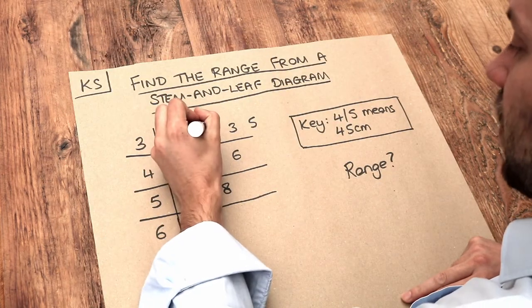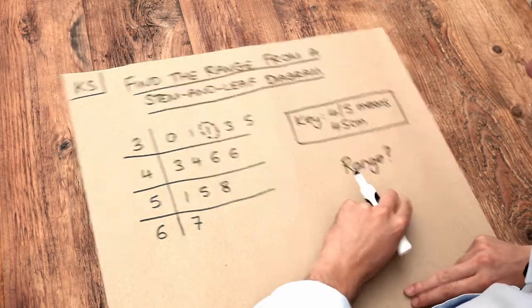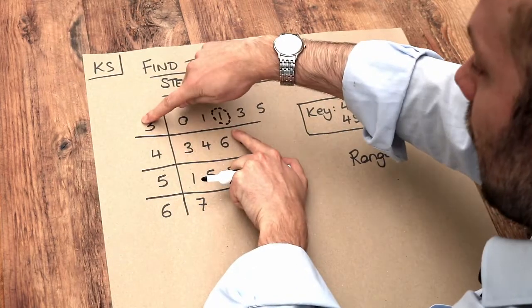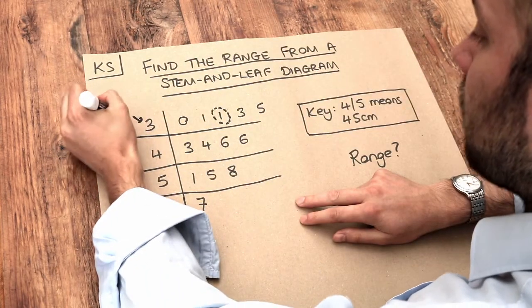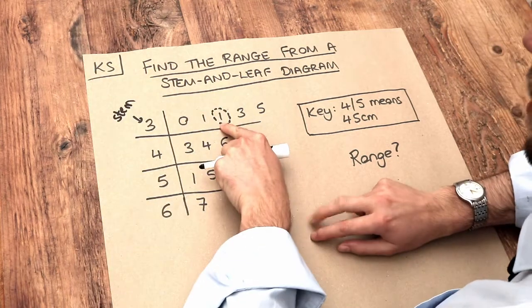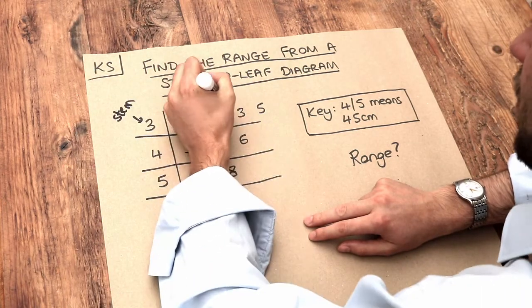So for example, if we look at this number here on the left, this is known as the stem, that gives you the first digit, and this one is the units digit, that's the leaf.